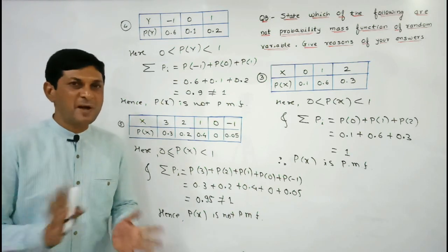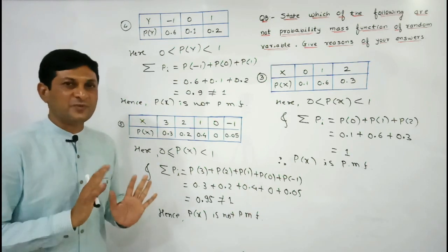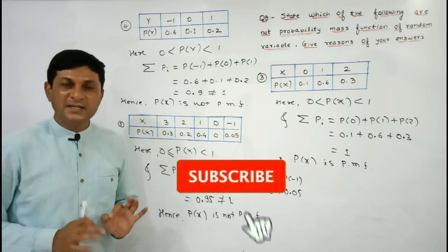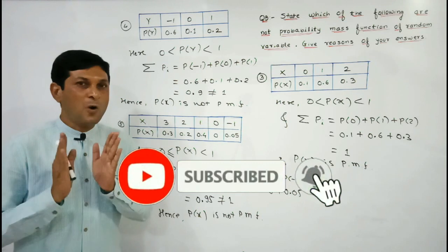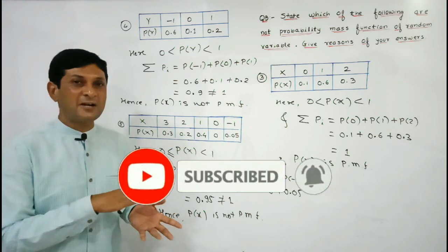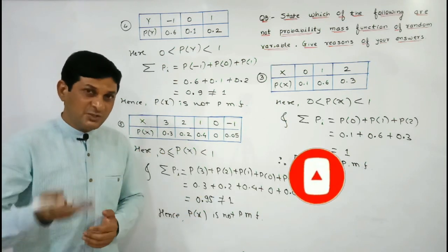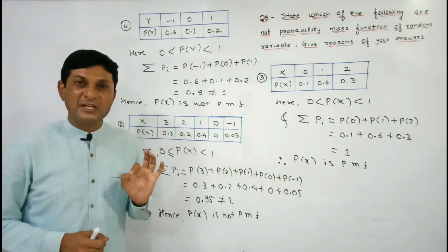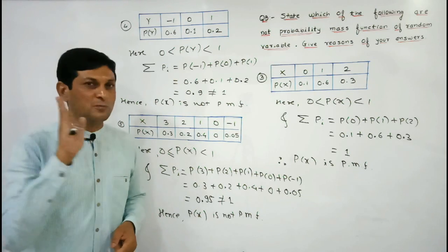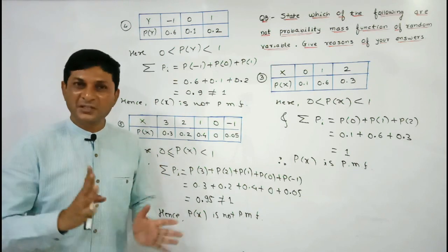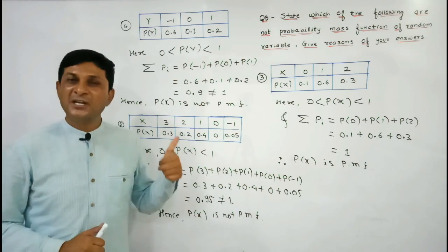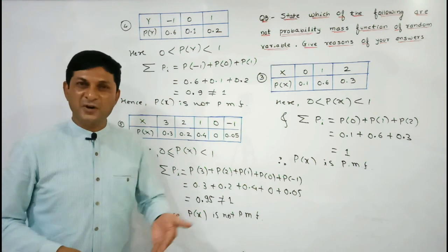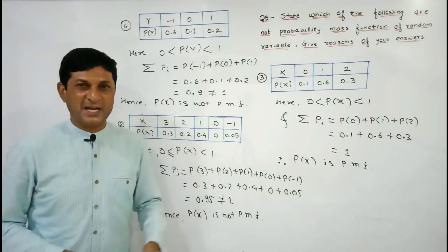The idea of how to check whether a given function is a probability mass function or not should now be very clear from these five examples. We have completed all questions in the second part of this question bank. In the next video we will start the third part, discussing questions that can be asked for two marks. If you find these videos helpful, please like, share with your friends, and subscribe to the channel.